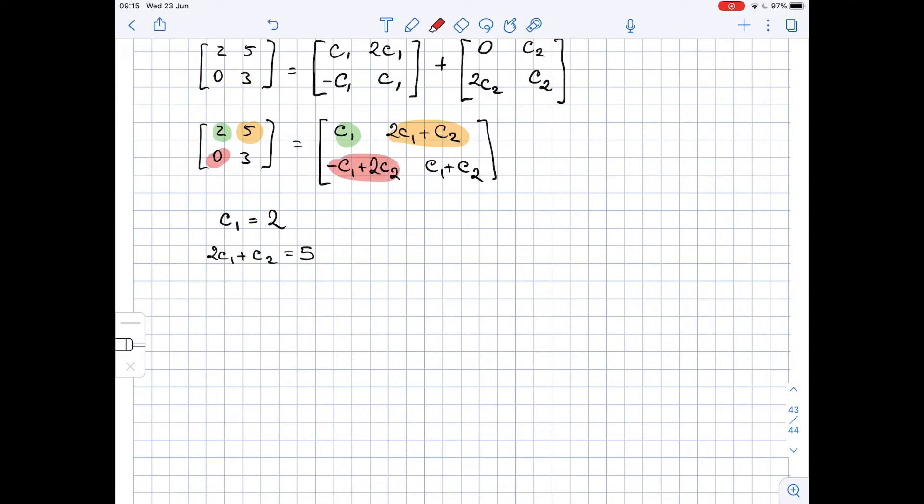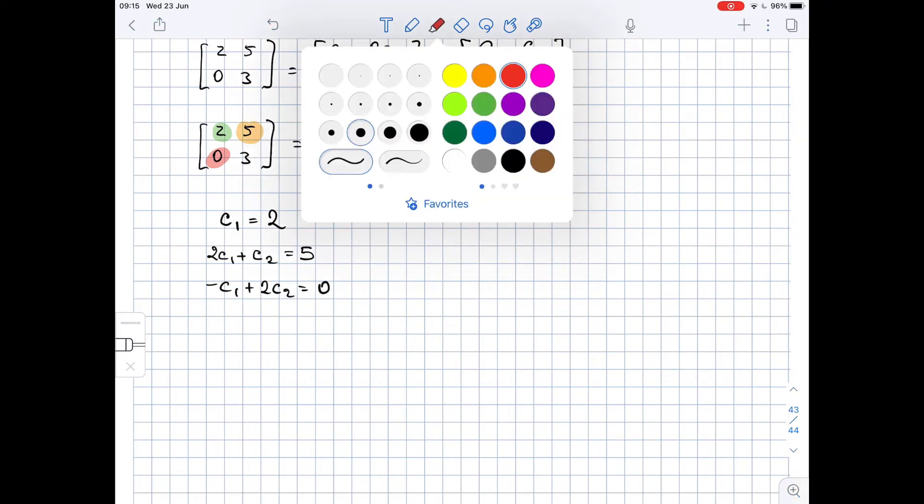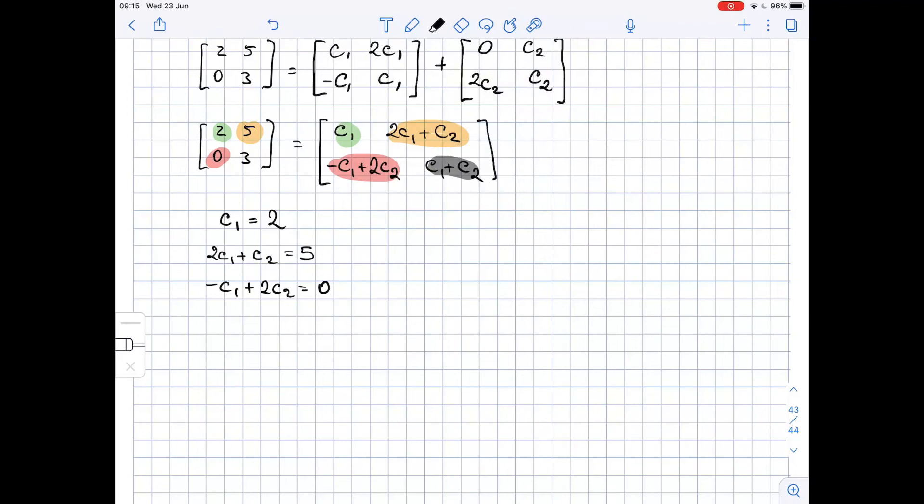Negative C1 plus 2C2 equals 0, and C1 plus C2 equals 3.